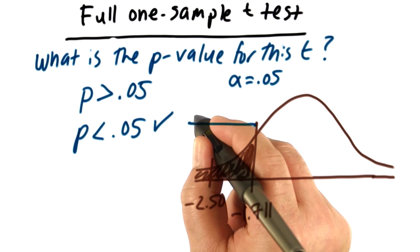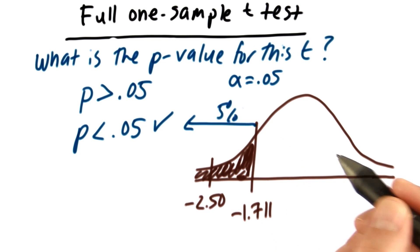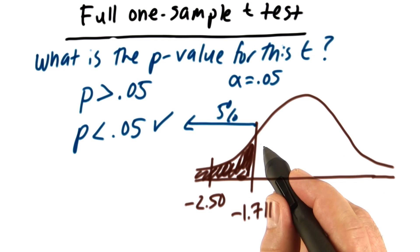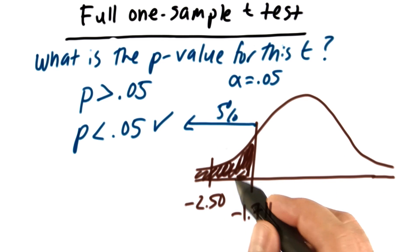That means that this area beyond here is 5% of the distribution. Remember the critical value cuts off the lower 5% of the distribution.